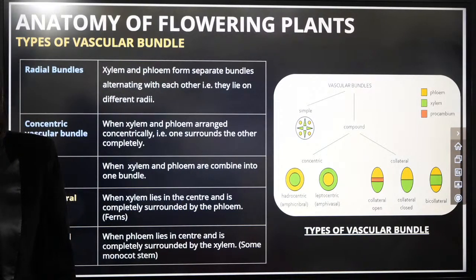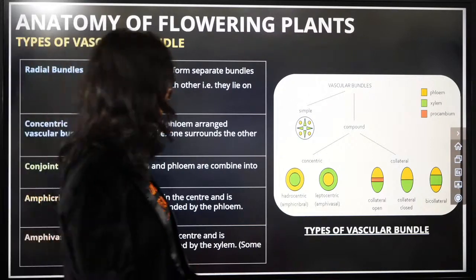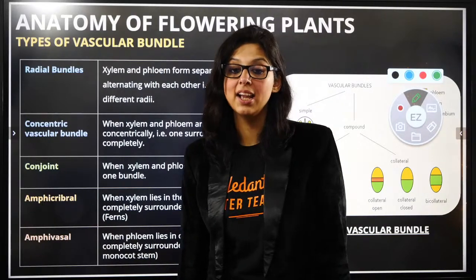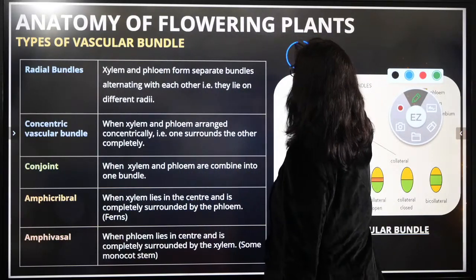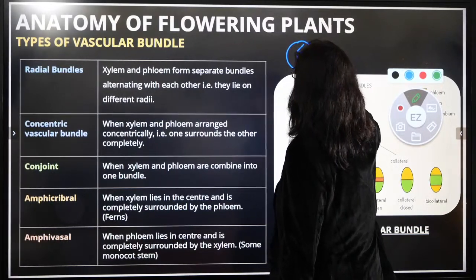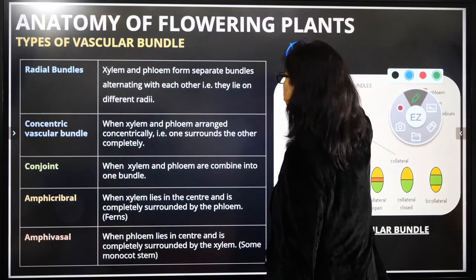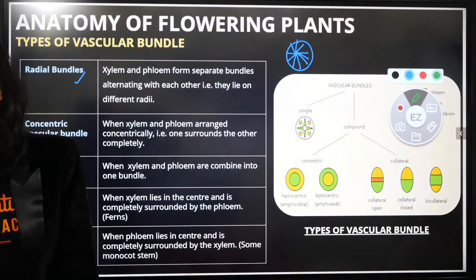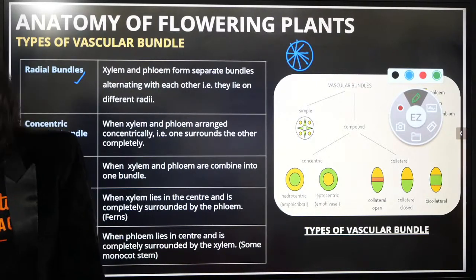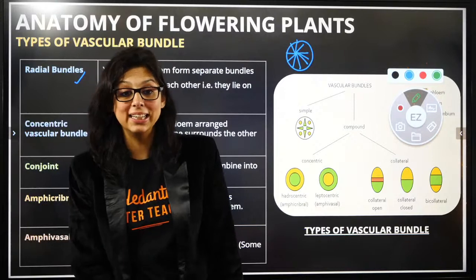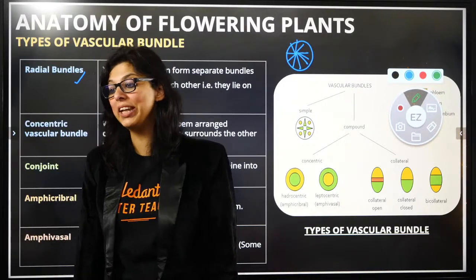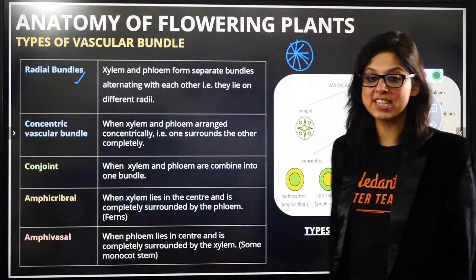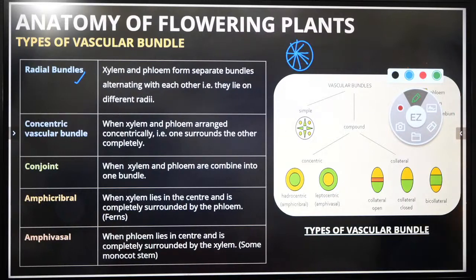Ground tissue: the ground tissue is what is present between epidermis and vascular tissue — it includes parenchyma, collenchyma, and sclerenchyma — making up the cortex, pith, and pericycle. Now let's quickly cover vascular bundles. When xylem and phloem are arranged concentrically — one surrounding the other — it is called concentric.